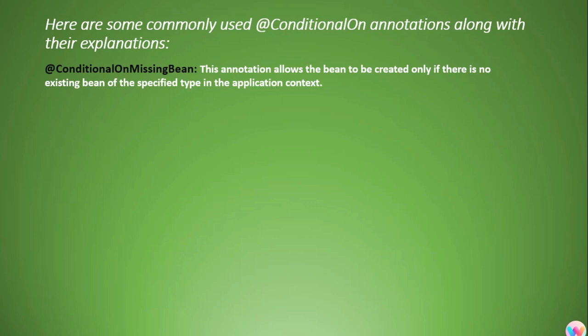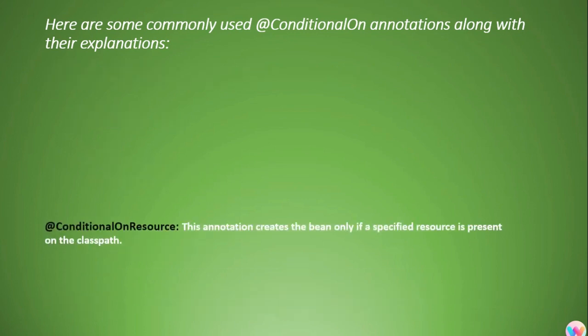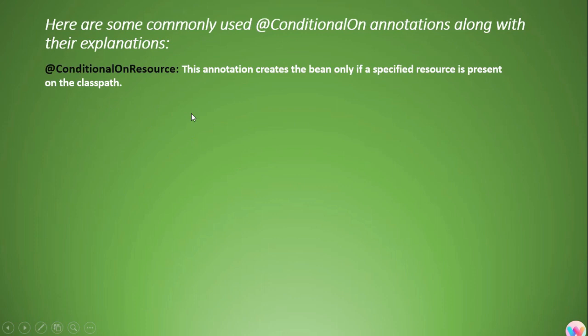Next is @ConditionalOnMissingBean — this allows the bean to be created only if there is no existing bean of the specified type in the application context. For example, if MyBeanB is not already present in the application context, then only it should be created. In this example, MyBeanB will only be created if there is no existing bean of type MyBeanB — otherwise it will be ignored.